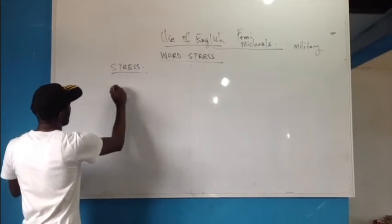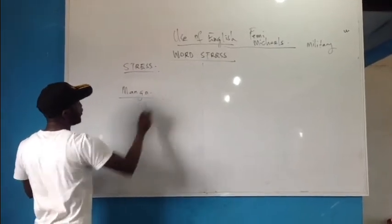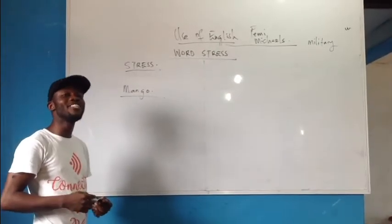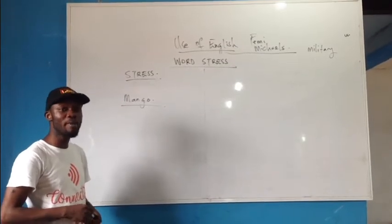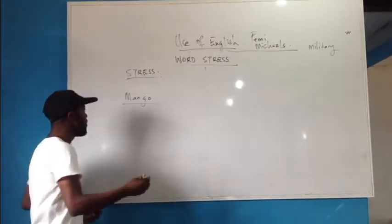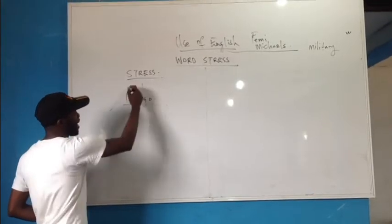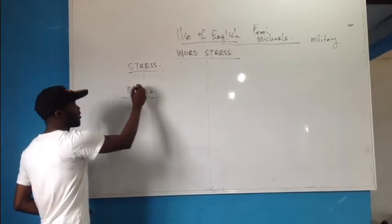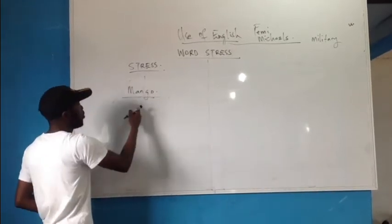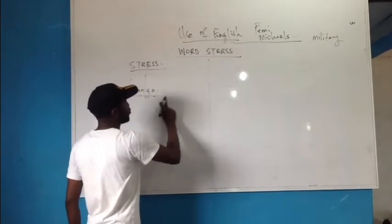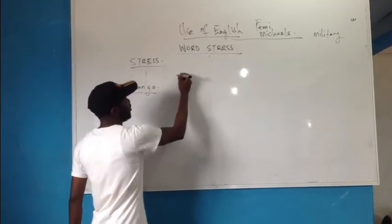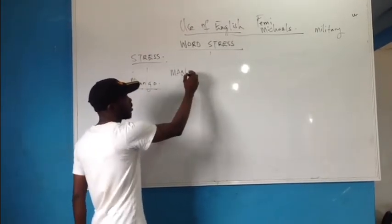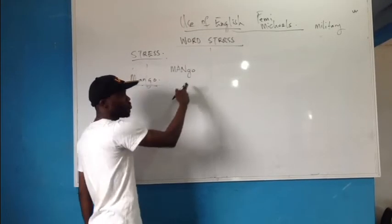Look at a word like mango. When you pronounce it: MAN-go. The 'MAN' is stressed because it takes more muscular energy. In your examination, the syllable that is stressed will be written in capital letters, while the syllable that is unstressed will be written in small letters.